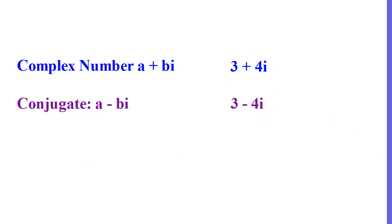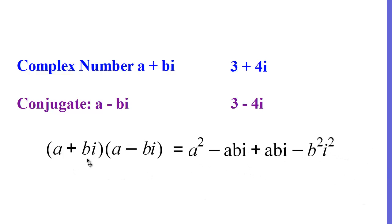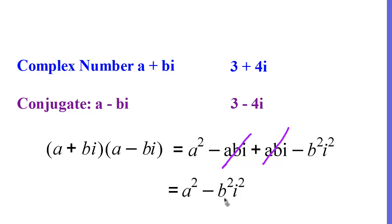An interesting thing happens when we multiply a complex number by its conjugate. If we take a plus bi and multiply it by its conjugate a minus bi, this is very similar to multiplying a binomial times a binomial in the form of (a + b)(a − b). The middle terms cancel out. So a plus bi times a minus bi equals a squared, and when we distribute — a times a is a squared, minus abi plus abi — then we have minus b squared times i squared.